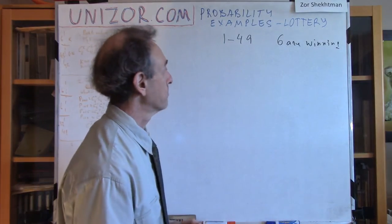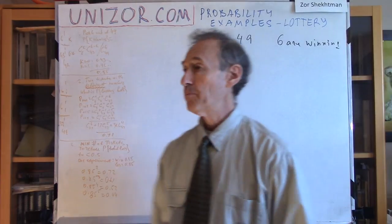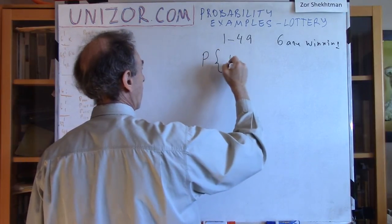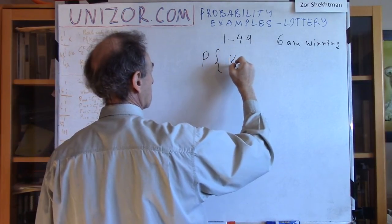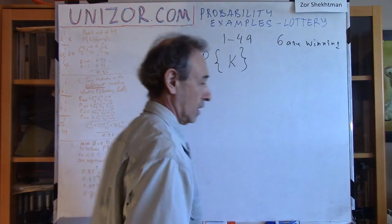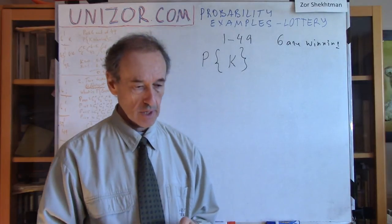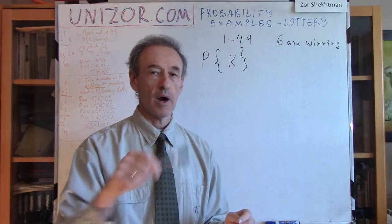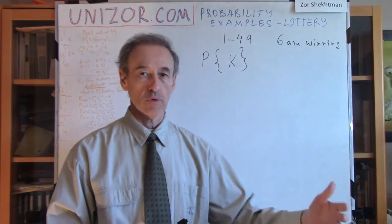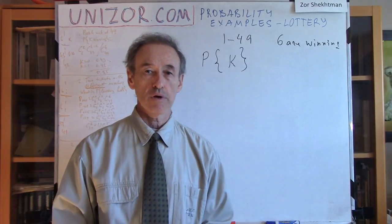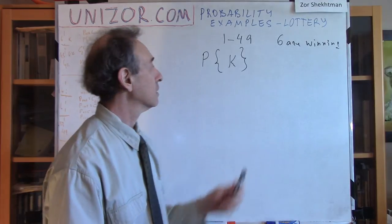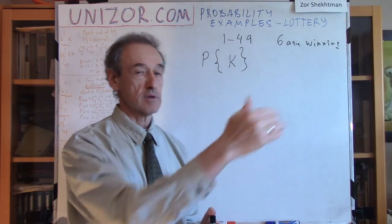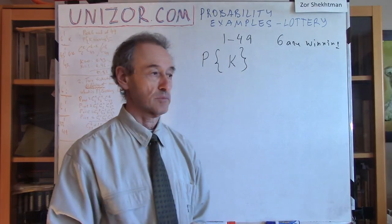Starting from two winning numbers properly guessed out of these six, the ticket is considered a winning ticket, and the prize depends on how many numbers — two or above — are properly guessed. So my problem right now is: what's the probability of guessing exactly k winning numbers? We're talking about one ticket — you buy a ticket, you mark six numbers, there's a drawing, and we want the probability that k of your six numbers correspond to the winning numbers.